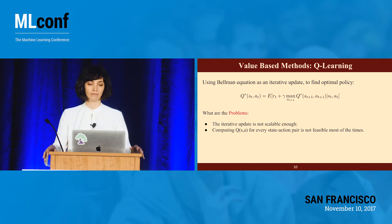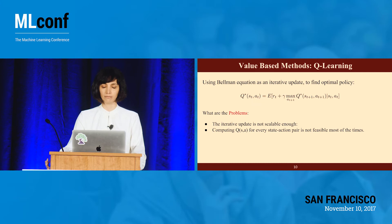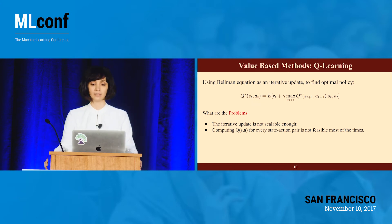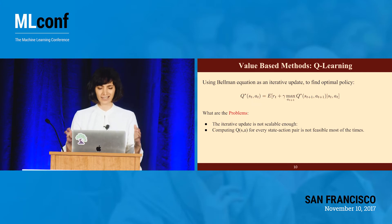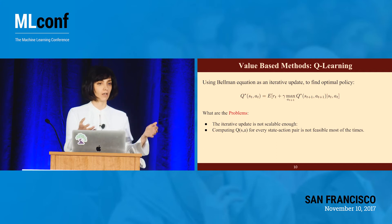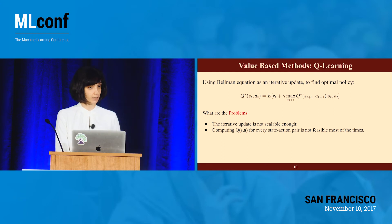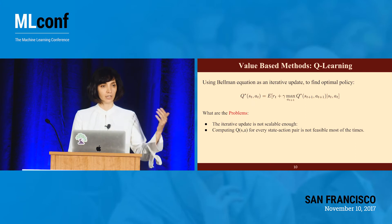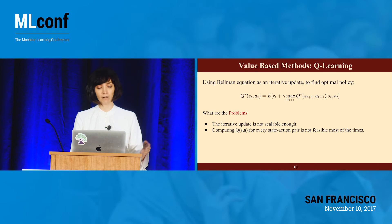Most of deep reinforcement learning has its basis in this Bellman equation. There are different, more optimized ways of solving it — but iterative updates may not be very scalable. We know that over time they converge to the optimal policy, but it's not scalable enough for very large problems.